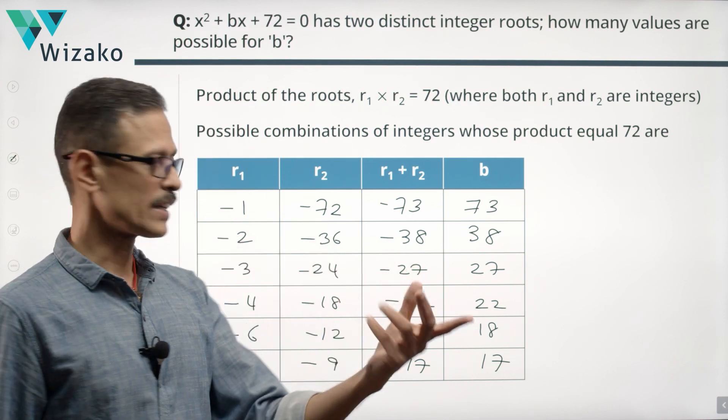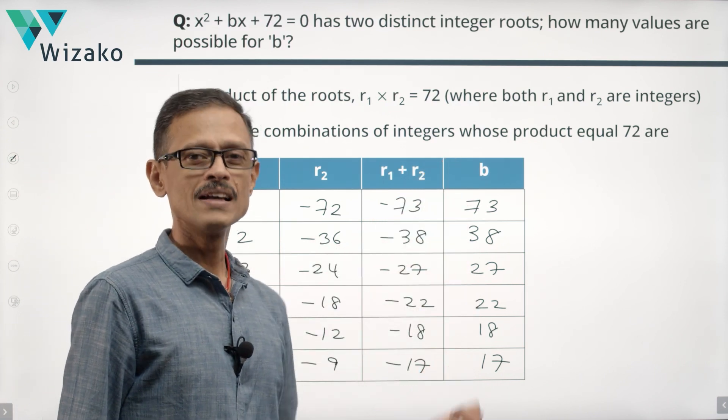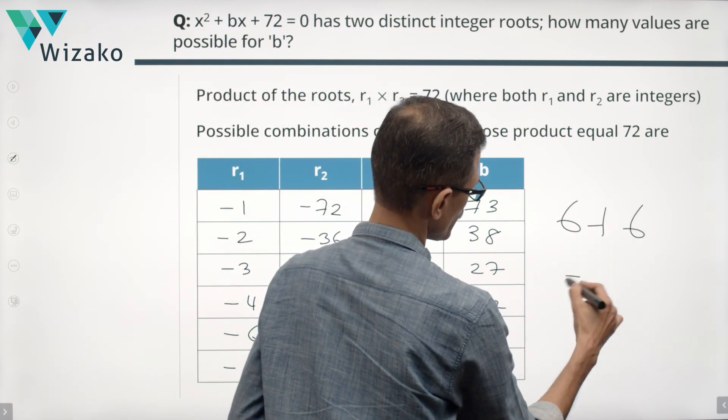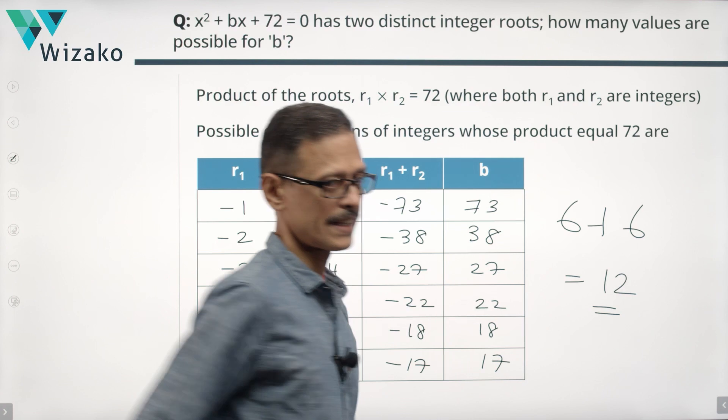So we had 6 values where B took negative values and 6 values where B is taking a positive value. So we have 6 plus 6, a total of 12 possible values is what B can take.